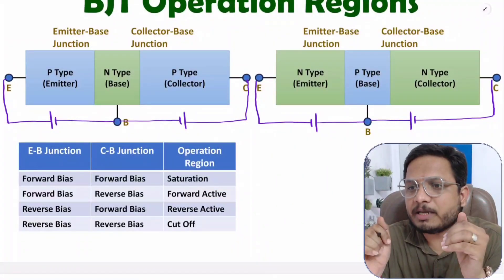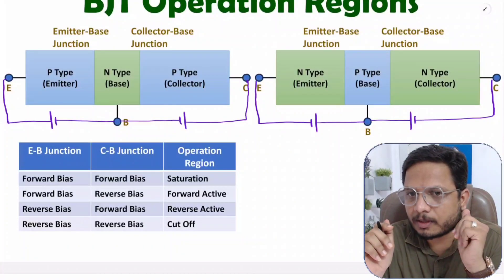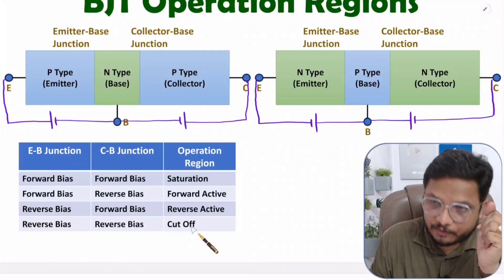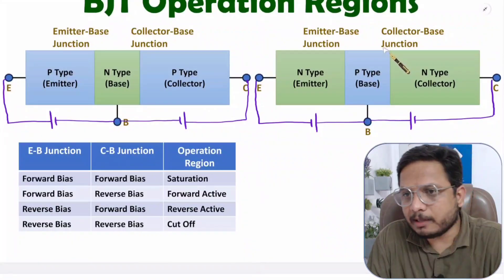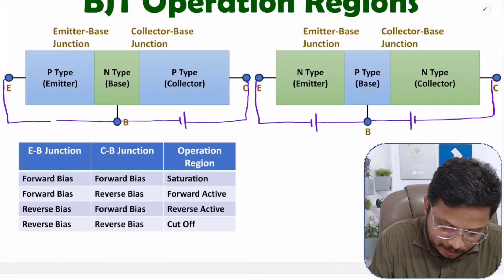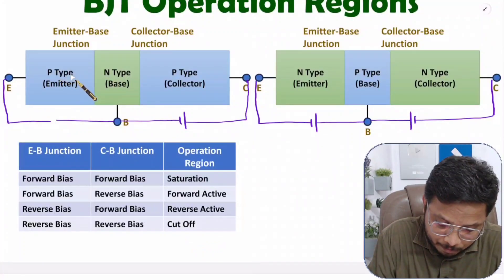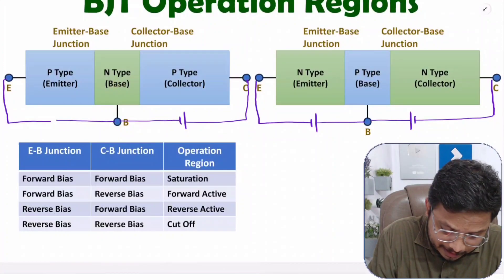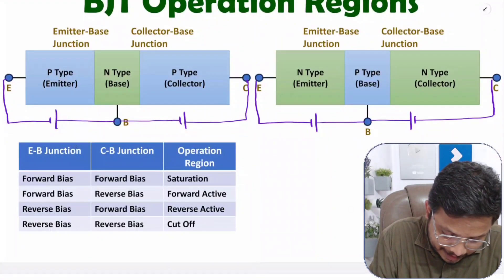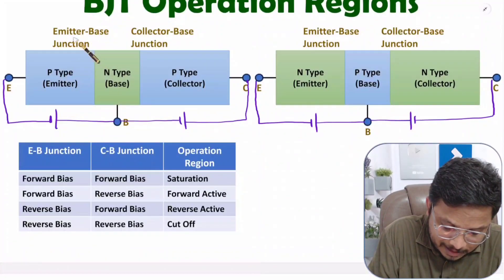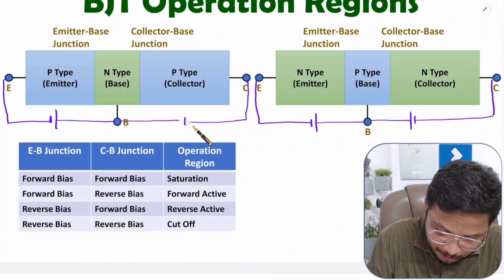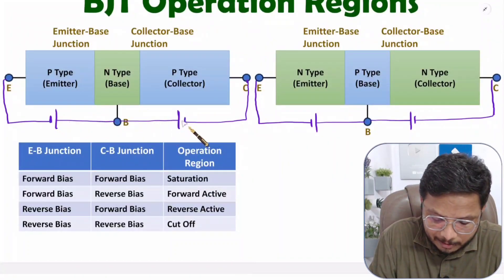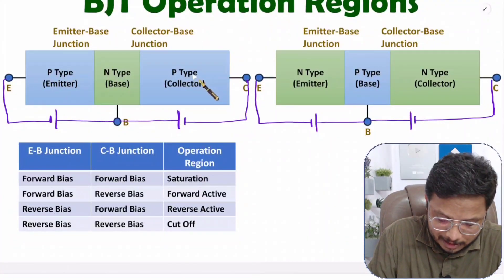For saturation, both the emitter-base and collector-base junctions are in forward bias. Now for the cutoff region, both junctions — emitter-base and collector-base — should be in reverse bias. For PNP in cutoff region, the N-type should be connected with the positive terminal and the P-type with the negative terminal, putting the emitter-base junction in reverse bias. To keep the collector-base junction in reverse bias, the P-type is connected with the negative terminal and the N-type with the positive terminal. That is how PNP is in cutoff region.